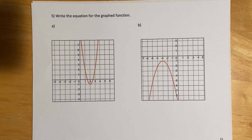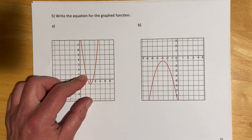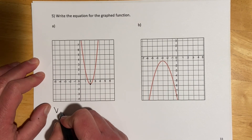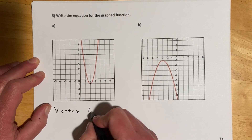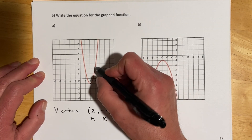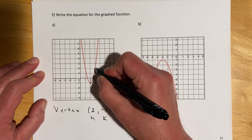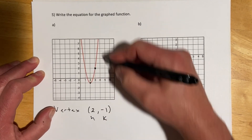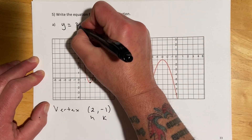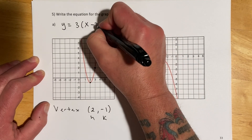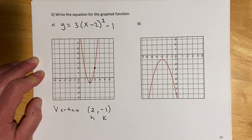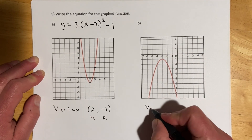For these first problems we're going from a graph backwards to find the equation. We look at the graph and figure out our vertex. The vertex here is (2, −1), so that's our h and k. The other thing we need is our stretch — it looks like it goes over one and the next clean point is up 3, and it's opening up so it's positive. So the equation would be y equals 3 times the quantity x minus 2, squared, minus 1.